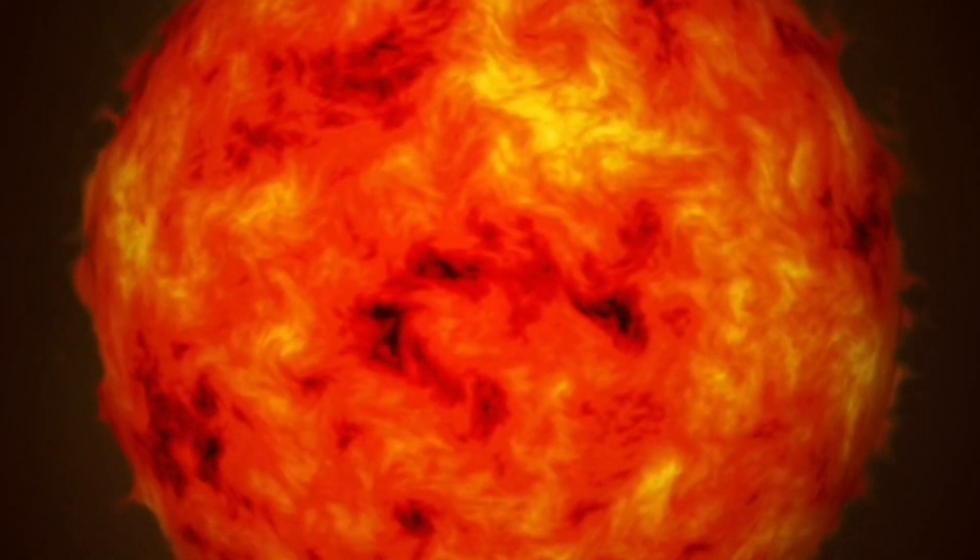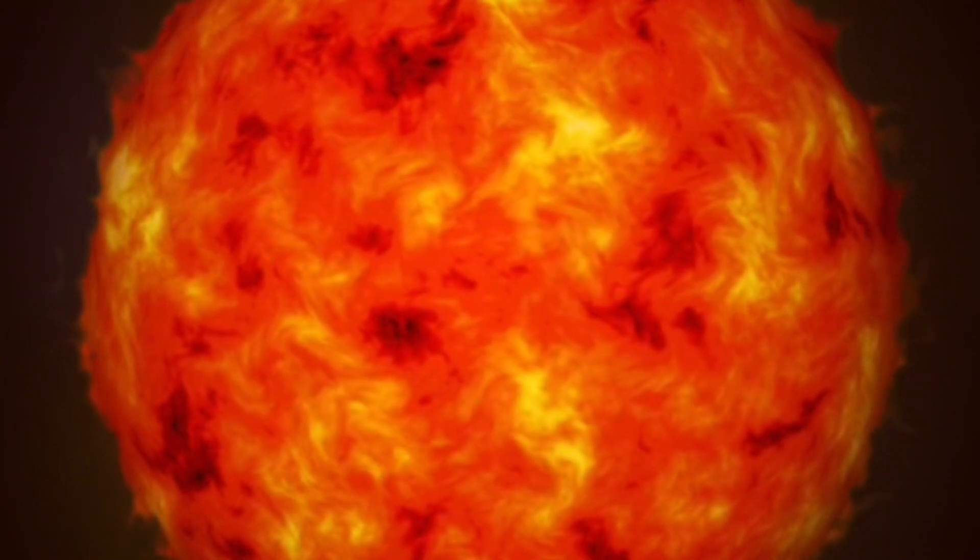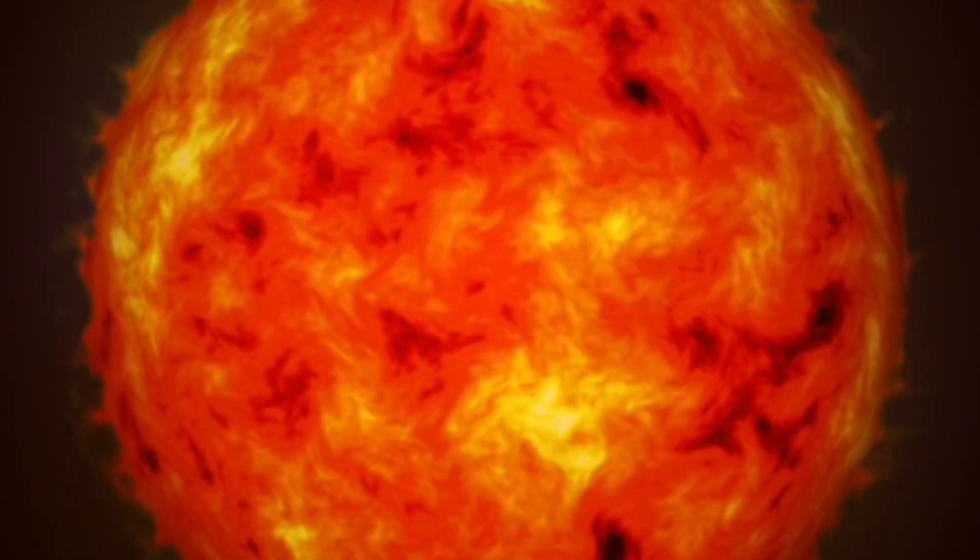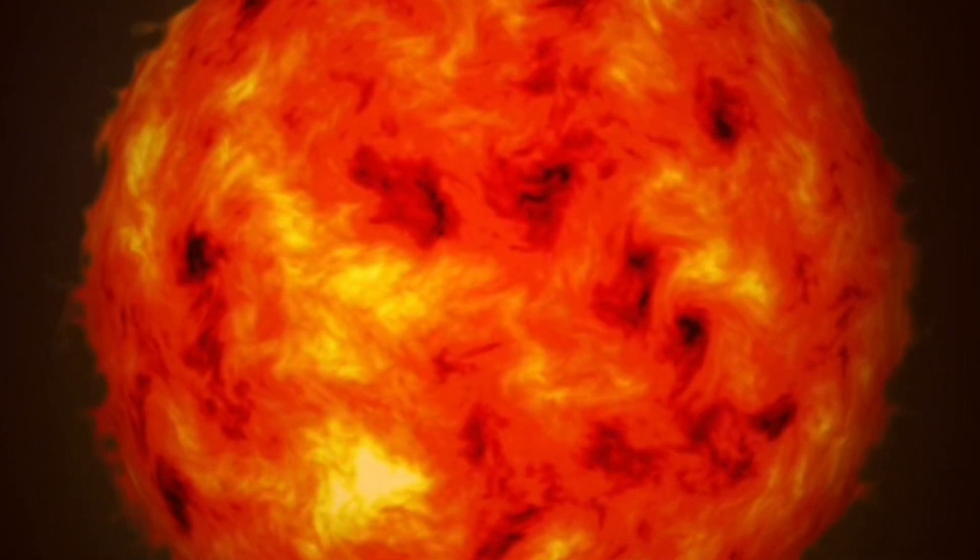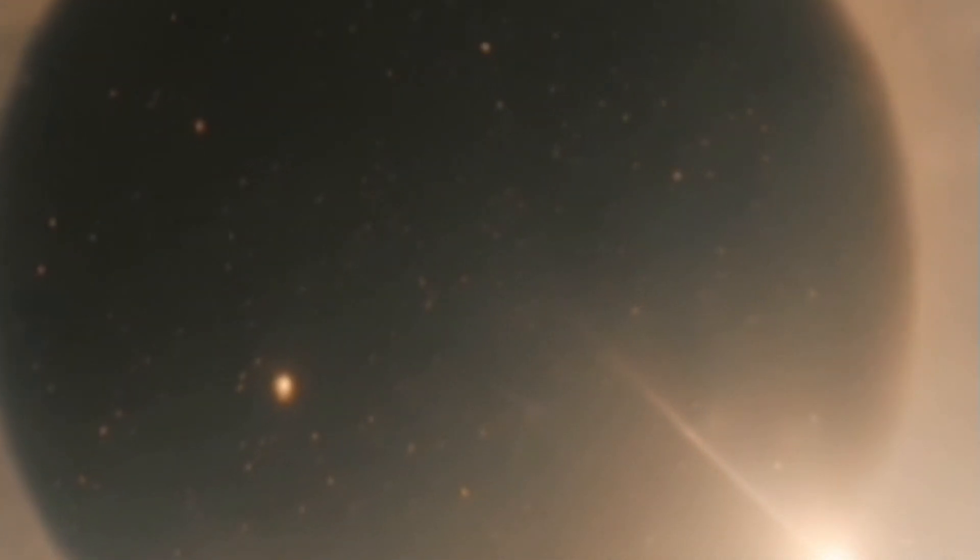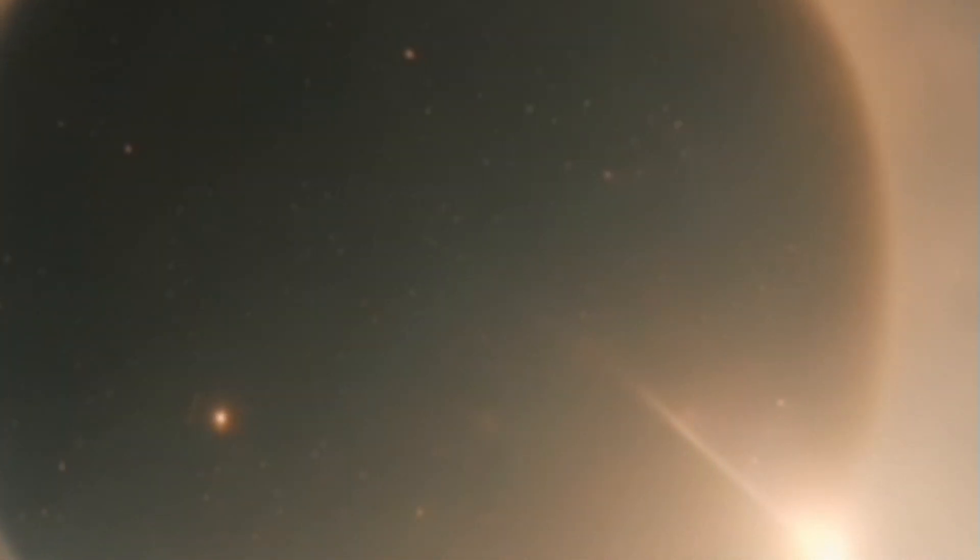UY Scuti's size is truly staggering. It has a radius that is estimated to be around 1,700 times that of the Sun. To put this into perspective, if UY Scuti were placed at the center of our solar system, its outer layers would extend beyond the orbit of Jupiter.